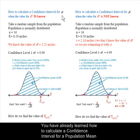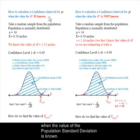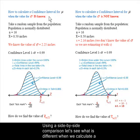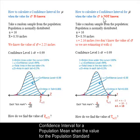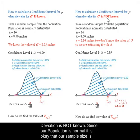You have already learned how to calculate a confidence interval for a population mean when the value of the population standard deviation is known. Using a side-by-side comparison, let's see what is different when we calculate a confidence interval for a population mean when the value for the population standard deviation is not known.